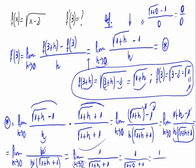This is 1 divided by the square root of 1 plus 0 plus 1 equals 1 divided by 1 plus 1. This is 1 half. And this is the result of the derivative in 3.